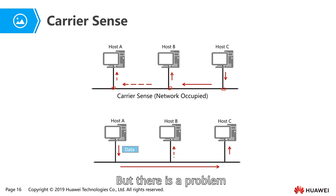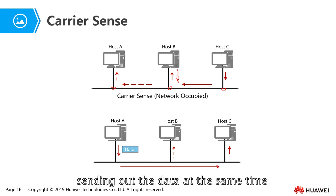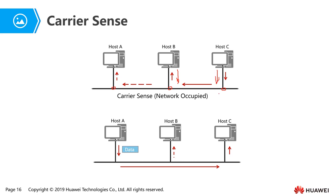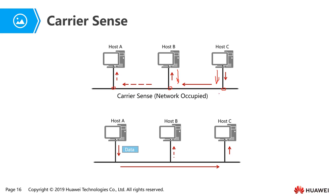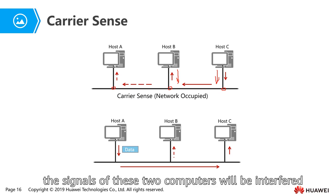Then there's a problem: if two computers send out data at the same time, what happens? This is a collision. The two computers' signals will be interfered with — the data will be destroyed, and the receiver cannot clearly distinguish each one's signals. So collision should be avoided in the network.